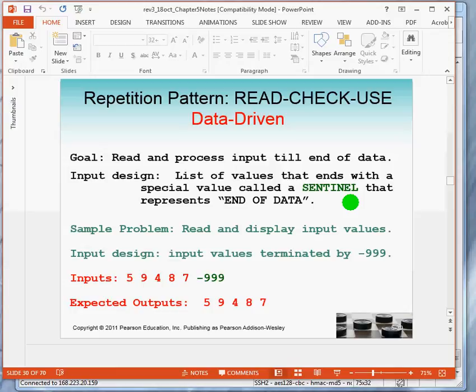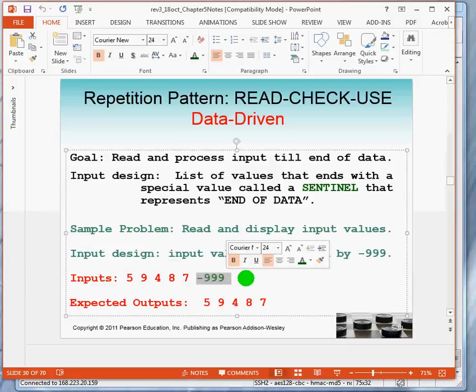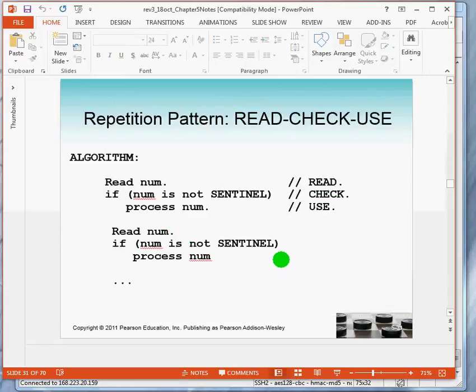Suppose I want to just read and display input values. The input will be designed such that the input values are terminated by the value negative 999. As an example, here is the input stream: 5, 9, 4, 8, 7, negative 999. It's not really treated as an input. It's there as a marker to say end of inputs. And we expect the outputs to be the values leading up to, but not including the minus 999.